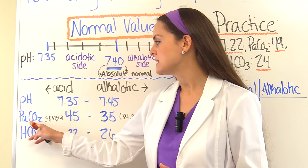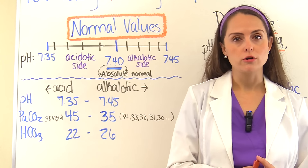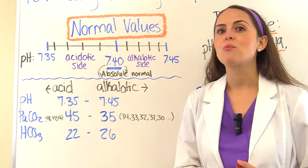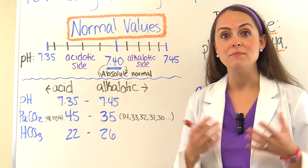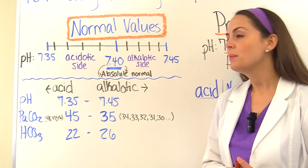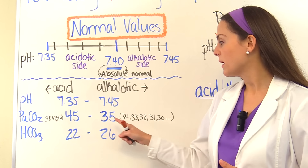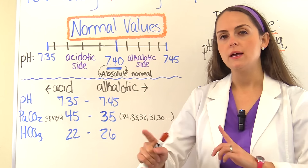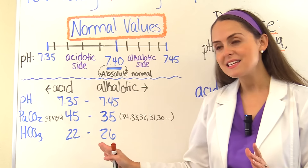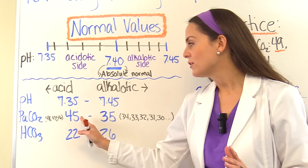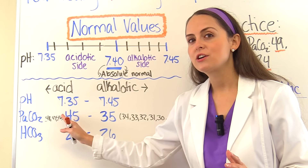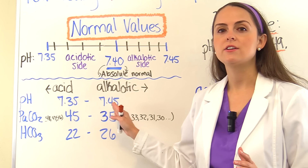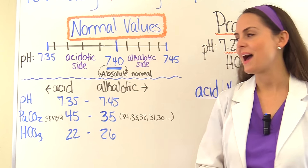Next is PaCO2 — the partial pressure of carbon dioxide — which represents our respiratory system. A normal PaCO2 is anywhere between 35 to 45. These numbers are flipped: if you set up a table, anything greater than 45 is considered an acid, and anything less than 35 is considered alkalotic.